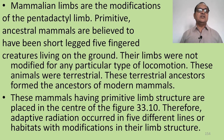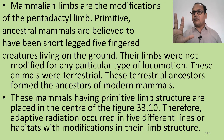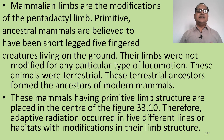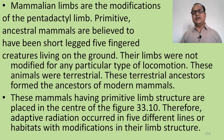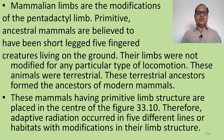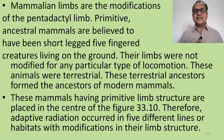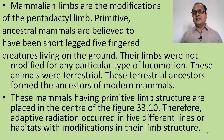Mammalian limbs are modifications of the pentadactyl limb with five digits. Primitive ancestral mammals are believed to have been short-legged, five-fingered creatures living on the ground, with limbs not modified for any particular type of locomotion. These terrestrial land mammals formed the ancestors of modern mammals. Those having the primitive limb structure are placed in the middle as a center, from which adaptive radiation occurred in five different lines with modification in their limb structure.